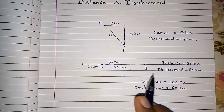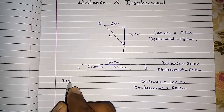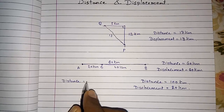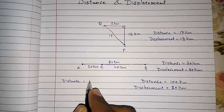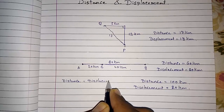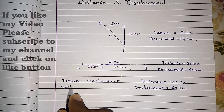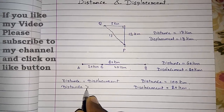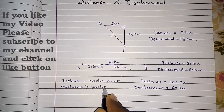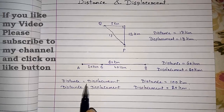From all this we come to know that displacement can be equal to distance, or distance can be greater than displacement. But displacement cannot be greater than distance.